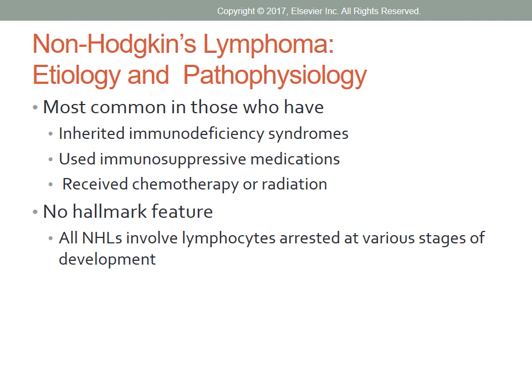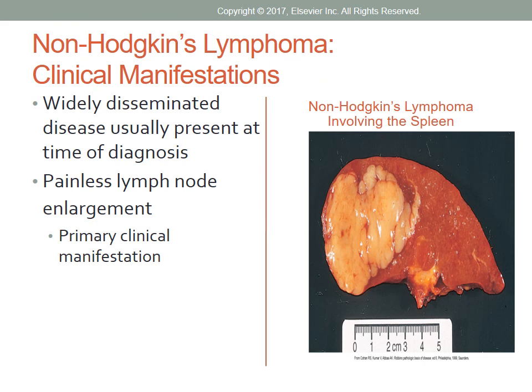All non-Hodgkin's lymphomas involve lymphocytes arrested in various stages of development and may mimic leukemia. Non-Hodgkin's lymphomas can originate outside the lymph nodes, and the method of spread can be unpredictable, with the majority of patients already having widely spread disease at the time of diagnosis. The primary clinical manifestation is painless lymph node enlargement. Because the disease is usually disseminated when diagnosed, other symptoms are present depending on where the disease has spread. Patients with high-grade lymphomas may have lymphadenopathy and constitutional B symptoms such as fever, night sweats, and weight loss.